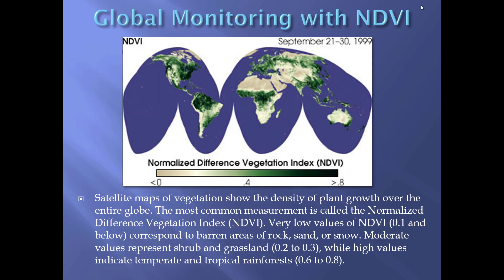NDVI is used for global monitoring. This image is a composite showing values from 1999, where satellite maps of vegetation show the density of plant growth over the entire globe. Low values correspond to barren areas of rock, sand, or snow; moderate values around 0.2 to 0.3 represent shrub and grassland; and high values of 0.6 to 0.8 indicate temperate and tropical rainforests. These are used by agriculture, world health organizations, and other groups working to look at plant production on a global scale.